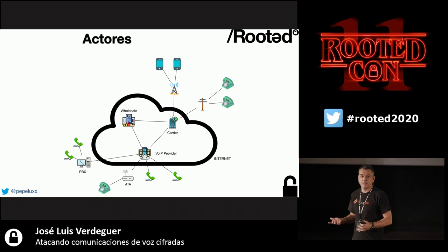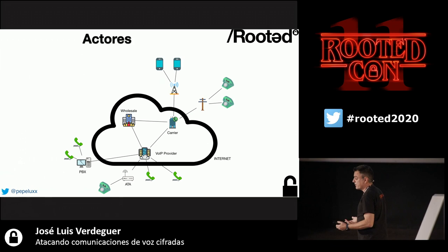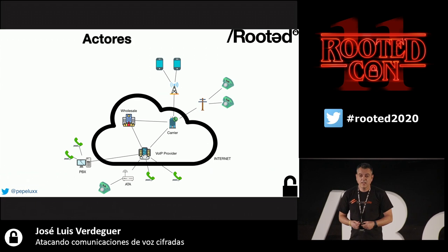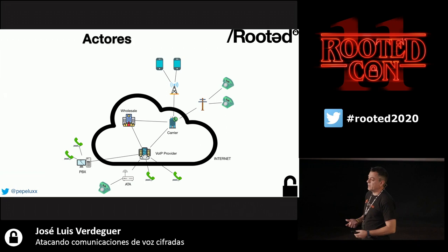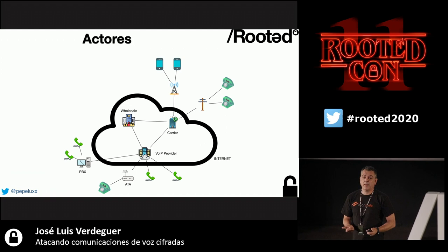In the VoIP ecosystem we have different players: telephones connected to the internet or analog phones. We can connect to a VoIP switchboard such as Asterisk. If we have a switchboard we communicate internally, but we also need to communicate externally using a VoIP provider. When I talk about carriers, I mean companies like Telefonica and Vodafone, interconnecting conventional networks and the internet.